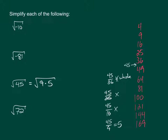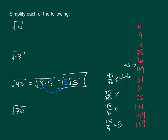The reason we use these perfect square numbers is because you can take their square roots easily. When you take the square root of 9, you get 3. Since we can't do anything with the 5, we just leave it inside the square root. So the simplified form of the square root of 45 is 3 times the square root of 5.